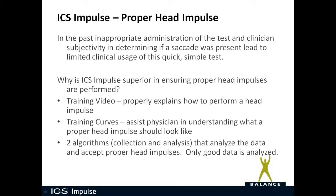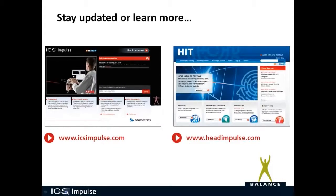In the past, inappropriate administration of the test and clinician subjectivity in determining if a saccade was present led to limited clinical usage of this quick, simple test. ICS Impulse is superior in ensuring proper head impulses are performed through training videos, training curves that assist in understanding what a proper head impulse should look like, and two algorithms — the collection and analysis algorithm — that accept only proper head impulses. Only good data is analyzed, and that's very important. You can always learn more about ICS Impulse and OtoSuite V on ICSimpulse.com, and learn more about the research behind the head impulse test and available courses on headimpulse.com.